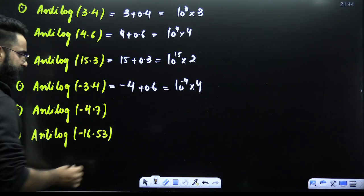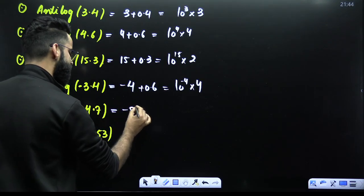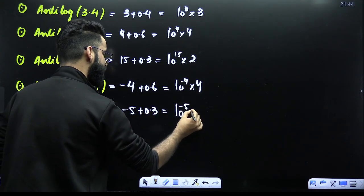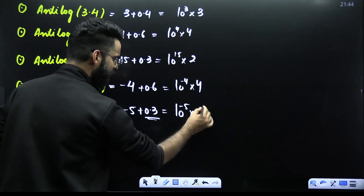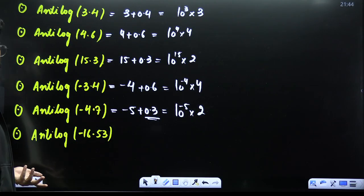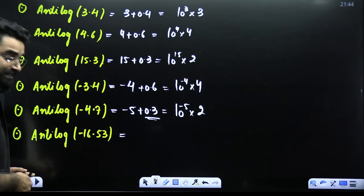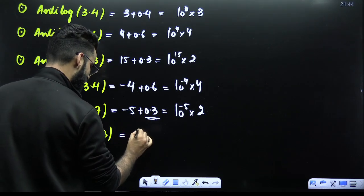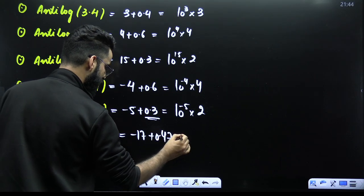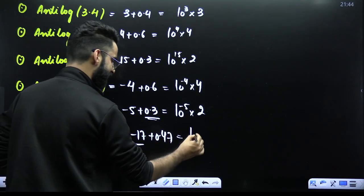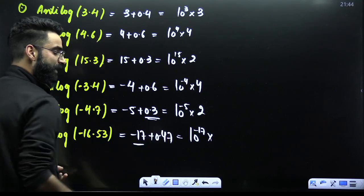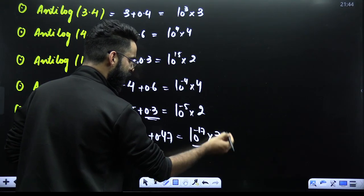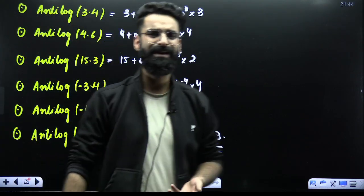NT log of minus 4.7: write minus 4.7 as minus 5 plus 0.3. Minus 5 gives 10^(−5), and 0.3 is log of 2. So the answer is 2 × 10^(−5) approximately. Similarly, for minus 16.53, split it as minus 17 plus 0.47. Minus 17 gives 10^(−17), and 0.47 is log of 3. So the answer is 3 × 10^(−17).